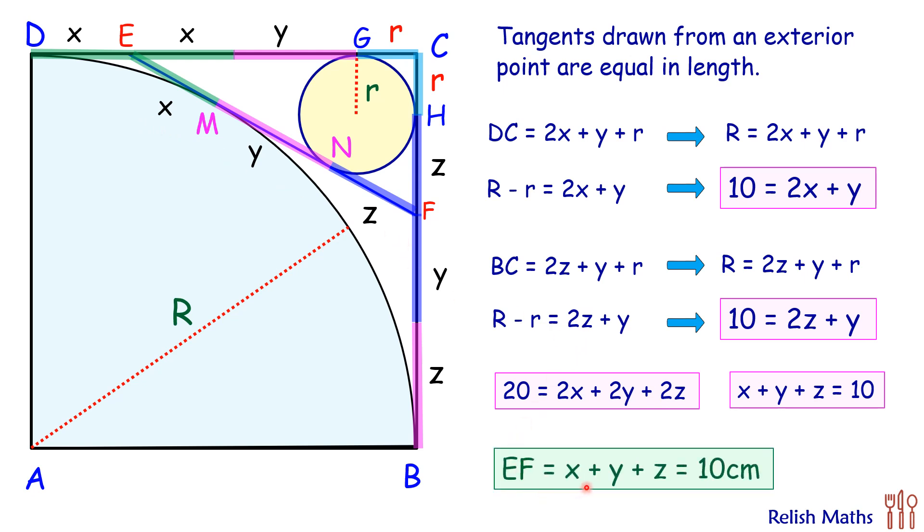So EF equals 10 cm and that's our answer. I hope you enjoyed the solution. I will see you in the next video, till then tata bye-bye.